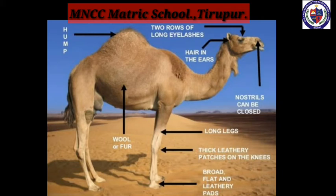Next we move to adaptation in camels. A camel lives in a hot desert where water is scarce. The body structure of a camel helps it survive in the desert. Feature one: the camel has long legs which help it keep its body away from the hot sand. Feature two: a camel can drink a large amount of water when it is available and stores it within the body.